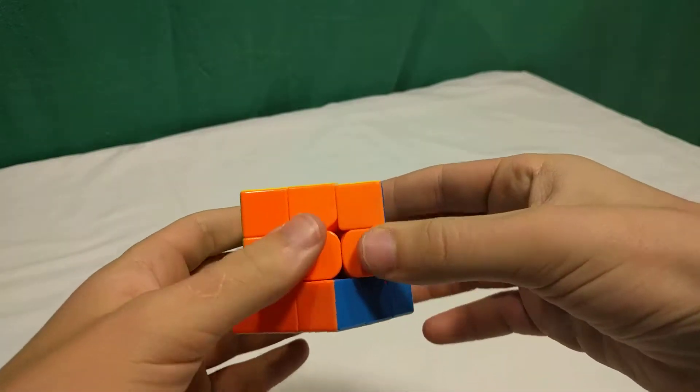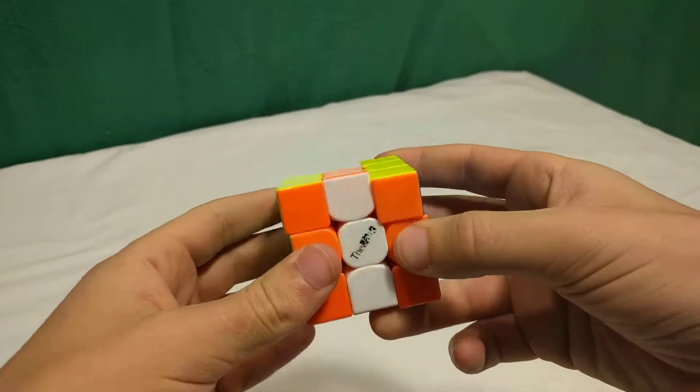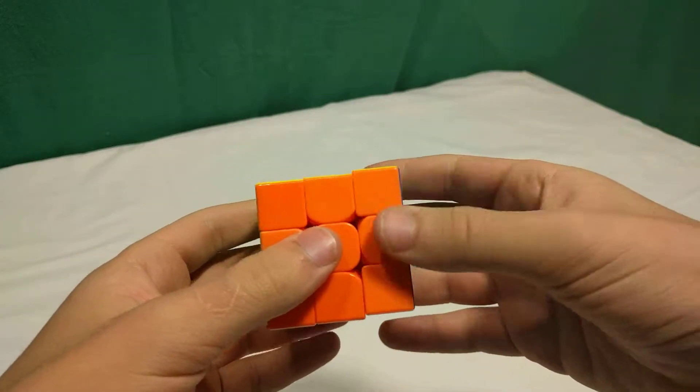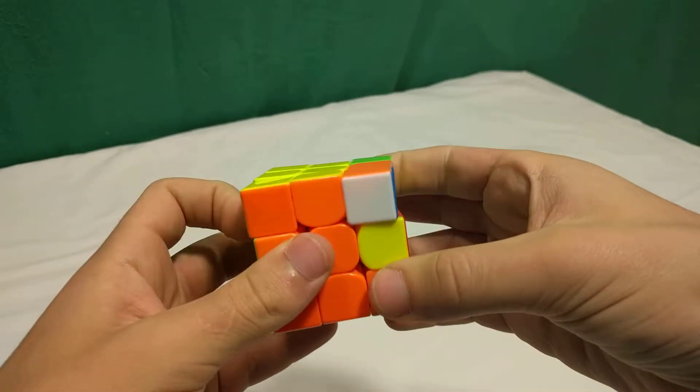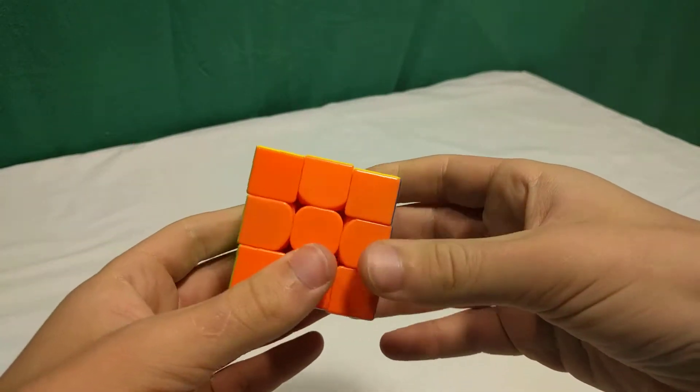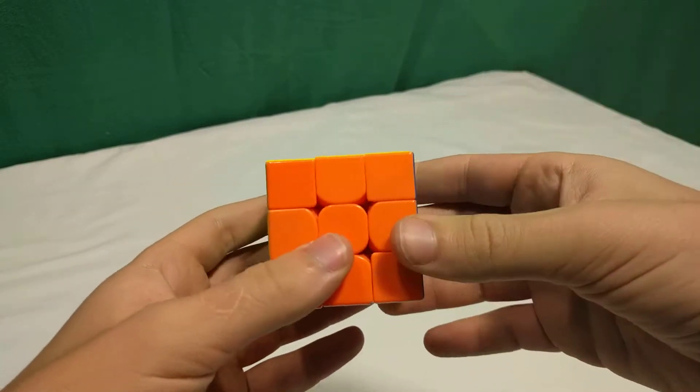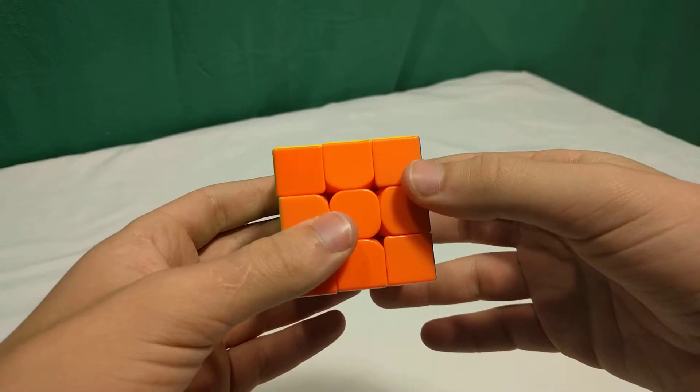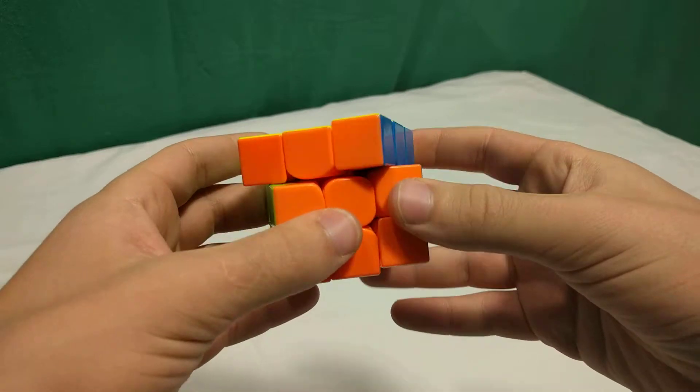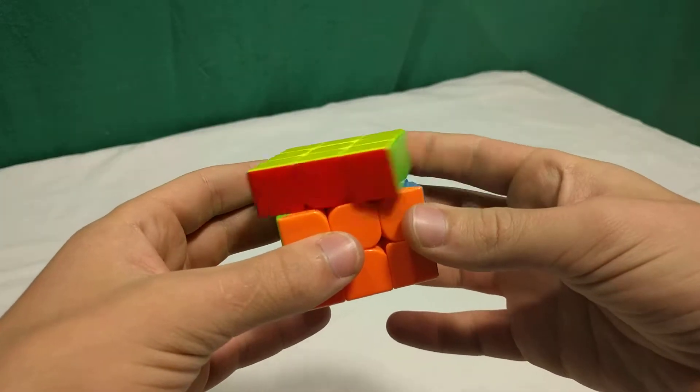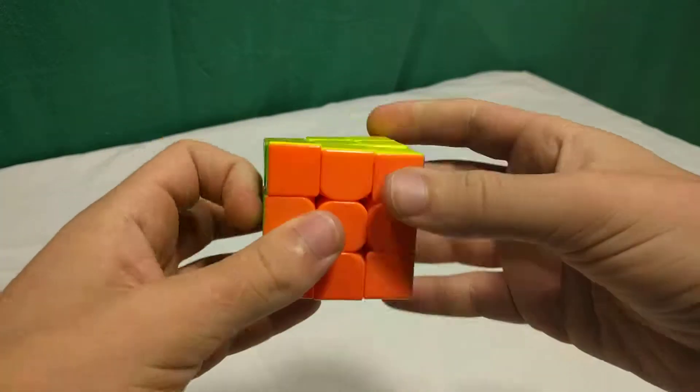When you get it, first of all, the tensions are very loose and it's a bit uncontrollable. It's made such that at loose tensions, or at pretty much all tensions, the cube just turns so effortlessly.